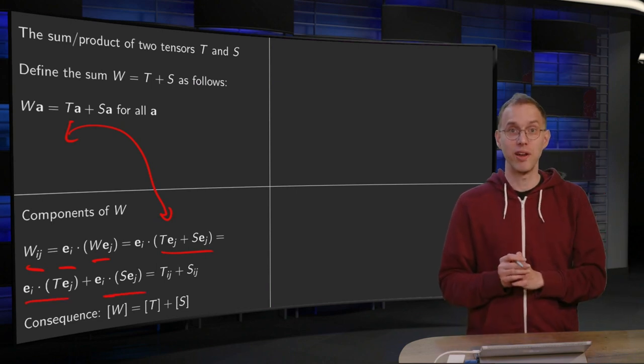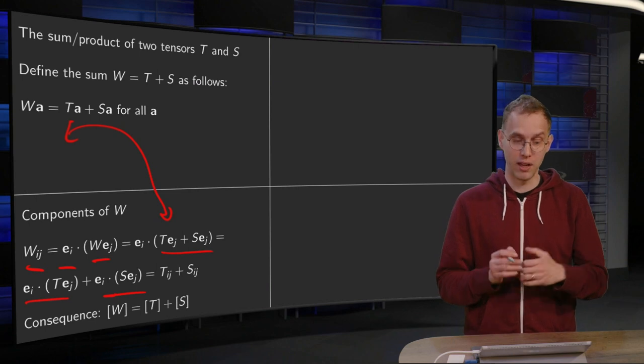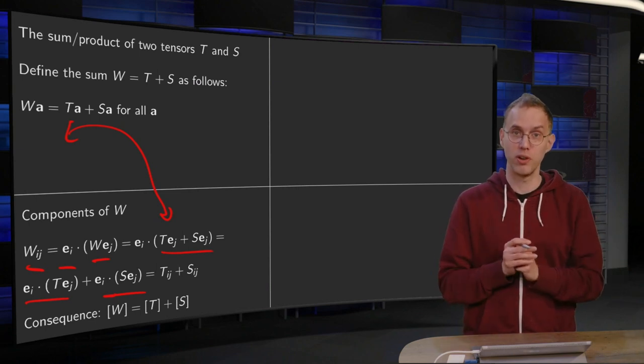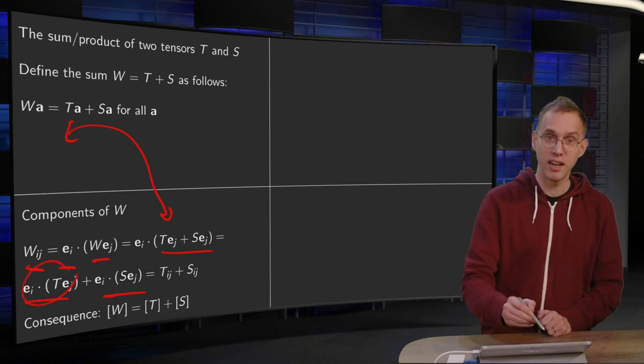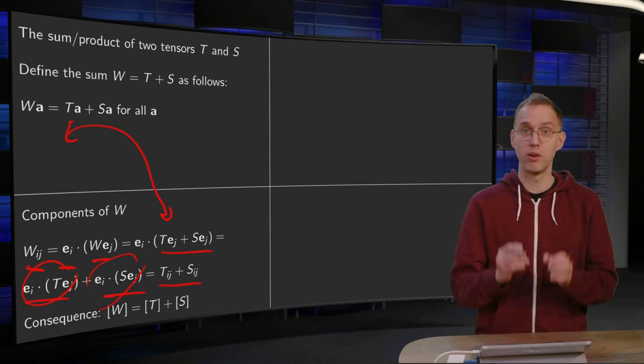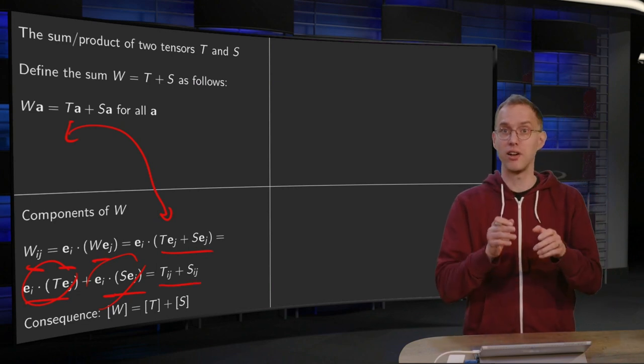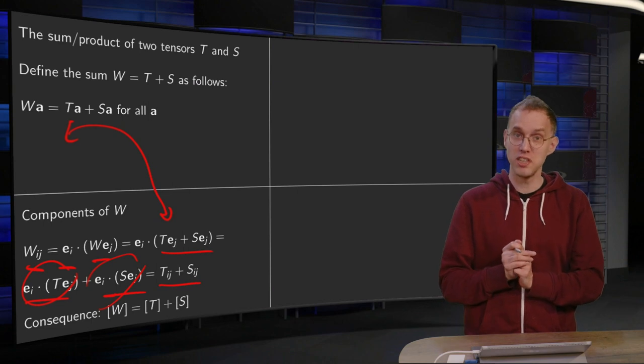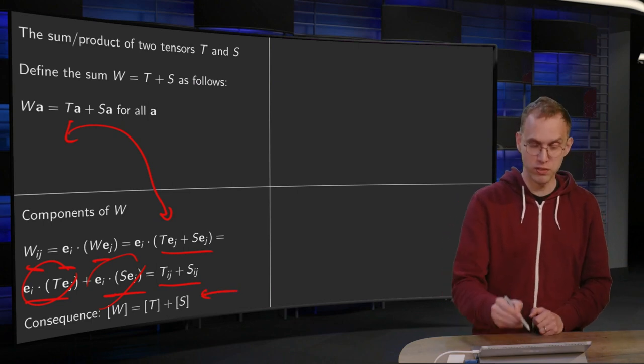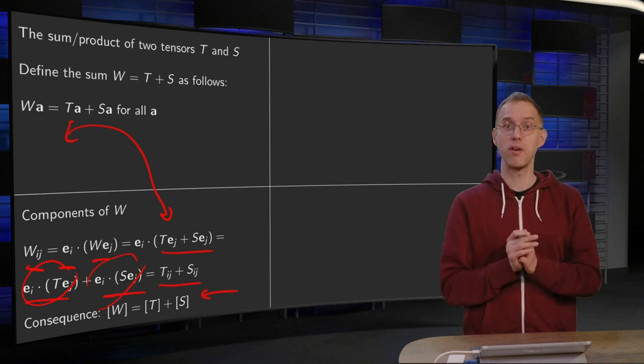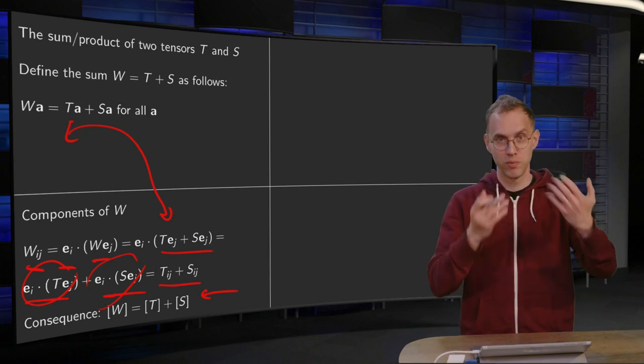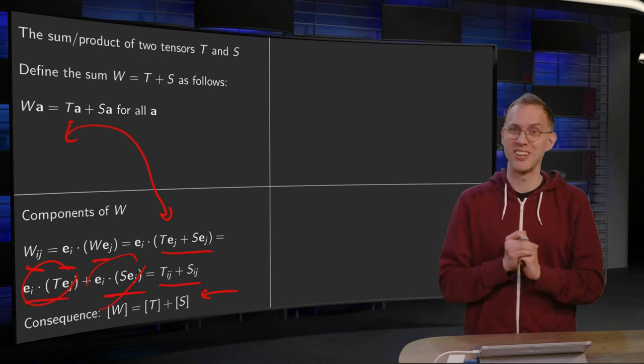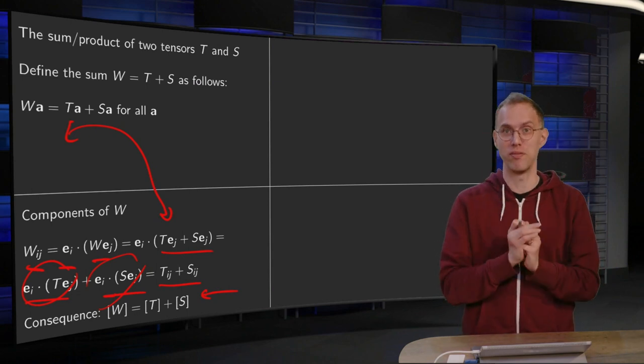And then again, we have this formula, the second consequence from an earlier web lecture you learned by heart. Here you have the T_IJ and here you have the S_IJ. So the components W_IJ are just adding the components T_IJ and S_IJ. So the standard matrix of W is just the sum of the standard matrices of T and S. You probably have guessed already. So that's if you take the sum of two tensors.